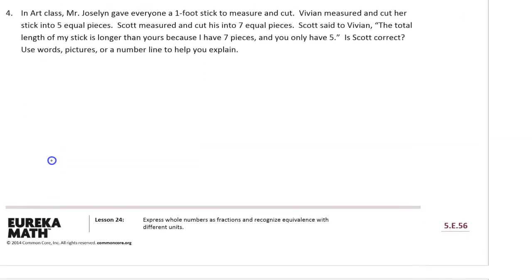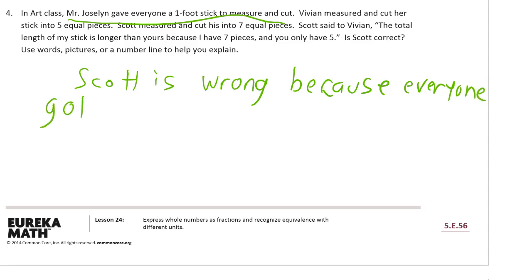In art class, Mr. Joslin gave everyone a one foot stick to measure and cut. Vivian measured and cut her stick into five equal pieces. Scott measured and cut his into seven equal pieces. Scott said to Vivian, the total length of my stick is longer than yours because I have seven pieces and you only have five. Is Scott correct? Use words, pictures, or a number line to help you explain. Well, of course Scott is wrong. Because it says right here in the first sentence, Mr. Joslin gave everyone the same size stick. The same length of stick.